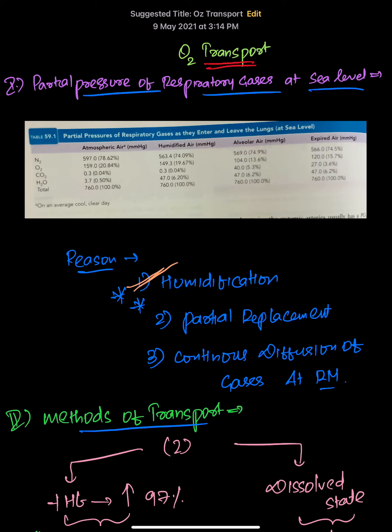At sea level, partial pressures vary in a certain fashion. There is a difference in concentration of respiratory gases at different places — in atmospheric air and in the alveoli. The three reasons for that are: first, humidification, which decreases oxygen concentration as dry air gets humidified in the trachea; second, partial replacement of alveolar air; and third, continuous diffusion of oxygen and carbon dioxide across the respiratory membrane.